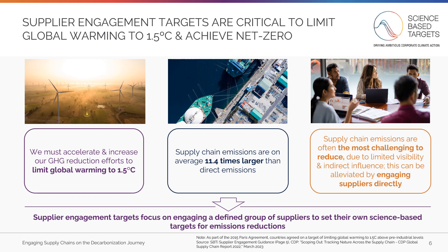Cross-industry momentum to mitigate climate change and achieve net zero emissions globally continues to grow. However, we must accelerate progress if we are to limit global warming to 1.5 degrees Celsius. For many companies, supply chain-related emissions are their largest source of emissions, on average 11.4 times larger than direct emissions from operations. These emissions are also the most challenging to reduce, often due to limited visibility and perceptions of limited influence on emission reduction measures. Using this guidance to engage suppliers directly can help alleviate some of those challenges. For most companies, supplier engagement targets offer an effective and critical way to influence their supply chain decarbonization, focusing on engaging a defined group of suppliers to set their own science-based targets for emissions reduction.